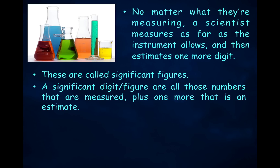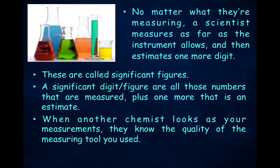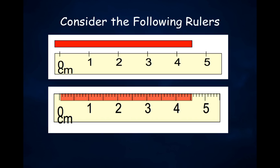No matter what they're measuring, a scientist measures as far as the instrument allows and then estimates one more digit. These are called significant figures. A significant digit or significant figure includes all those numbers that are measured, plus one more that is an estimate. When another chemist looks at your measurements, they know the quality of the measuring tool you used.